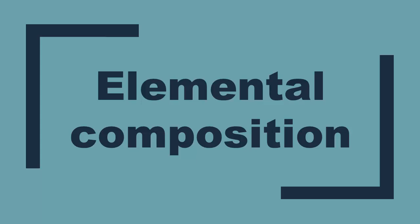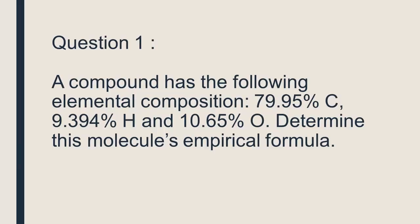Elemental Composition. Question 1: A compound has the following elemental composition: 79.95% carbon, 9.394% hydrogen, and 10.65% oxygen. Determine this molecule's empirical formula.